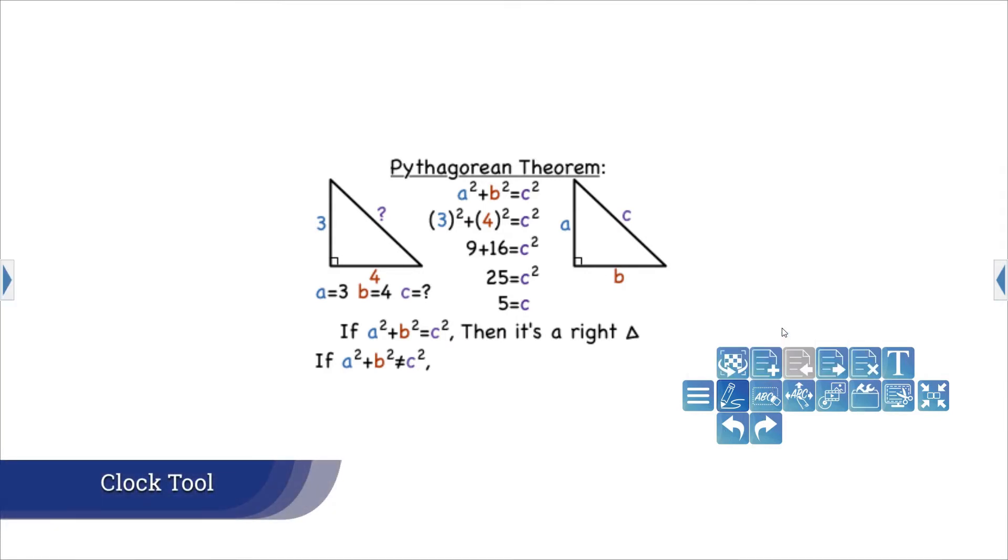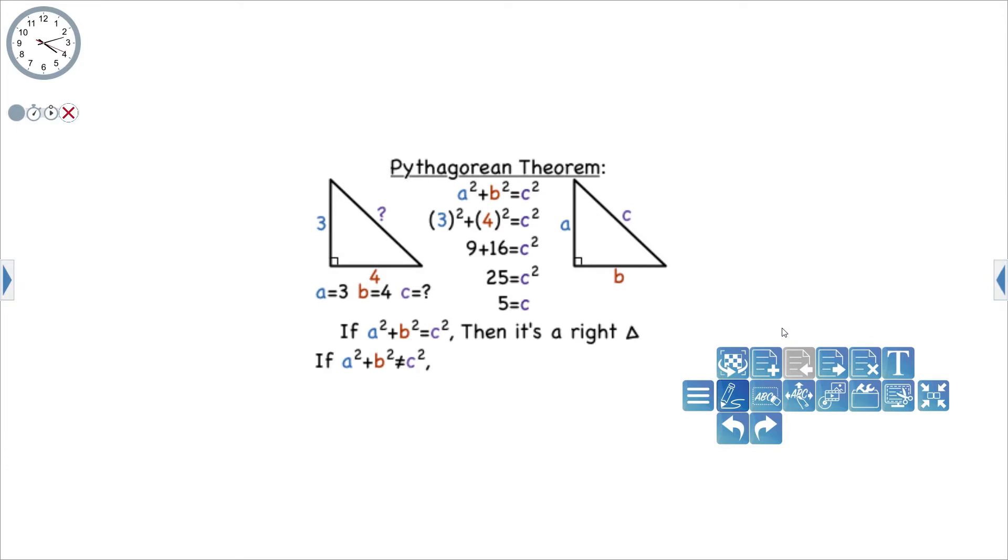The Clock button pulls up a clock in the top left corner of the screen to show you the time. You can also turn this clock into a stopwatch or a timer.